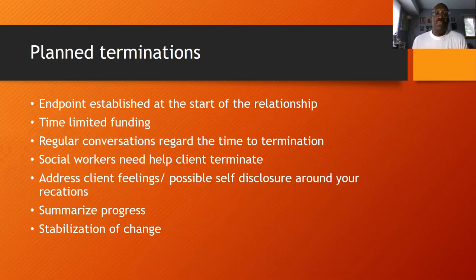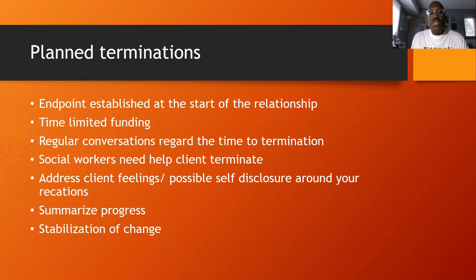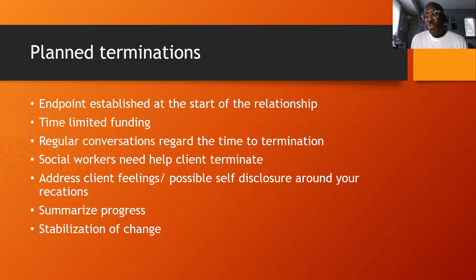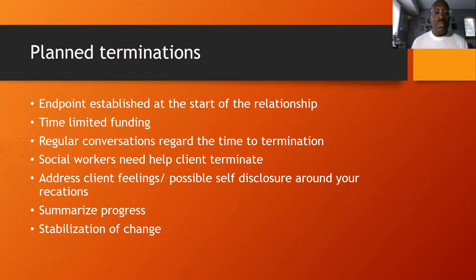With planned terminations and time limits, I would typically let clients know from day one that I'll only be working with them until a certain date, and have that conversation continuously as we move through the process. As we get closer to the end date, we have more conversations about how the process works. This includes being able to summarize progress, stabilize change, and even share through self-disclosure your own feelings about bringing the relationship to a close. In my own work, I always struggled with termination because I had gotten to like my clients — I saw their worth and value, saw them making progress. But as a responsible social work clinician, I have to allow people to walk out and make it on their own, and resolve my own feelings about closing that process.